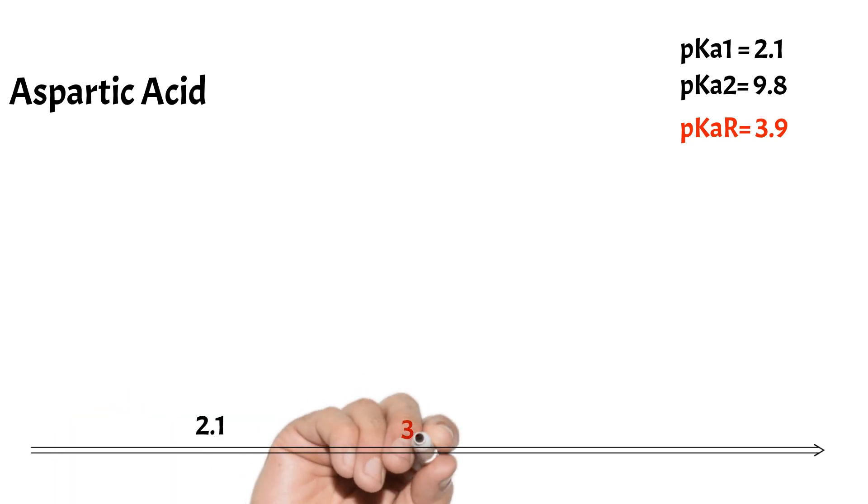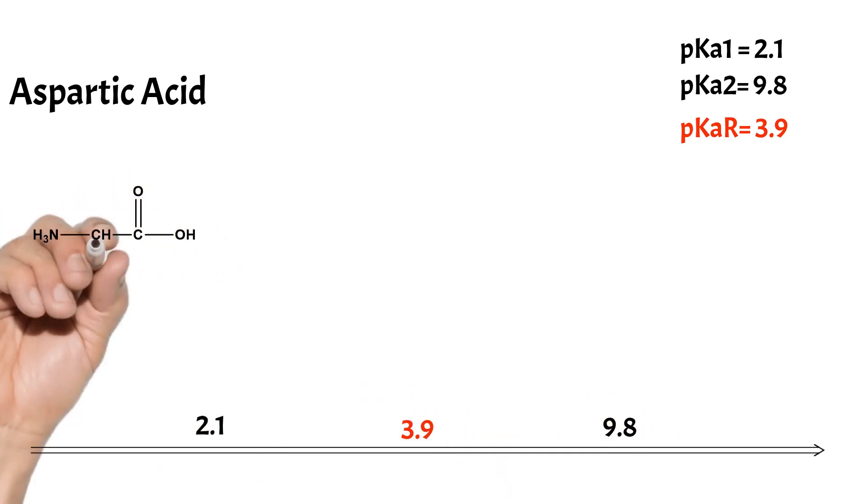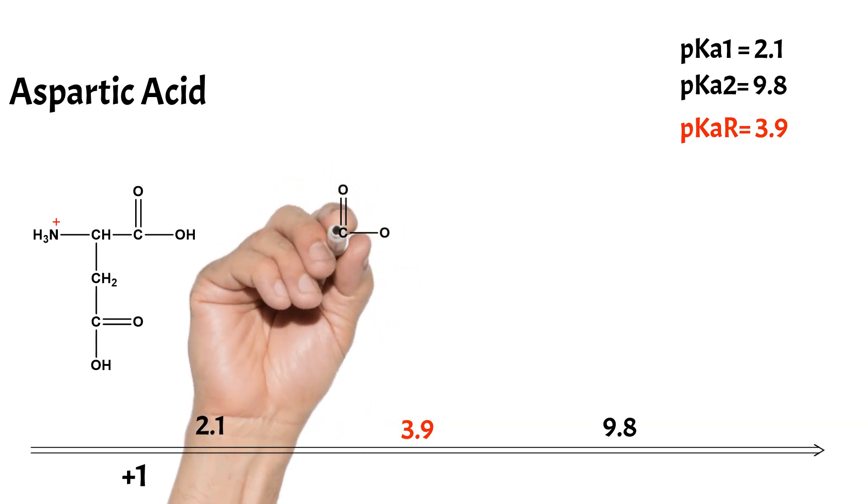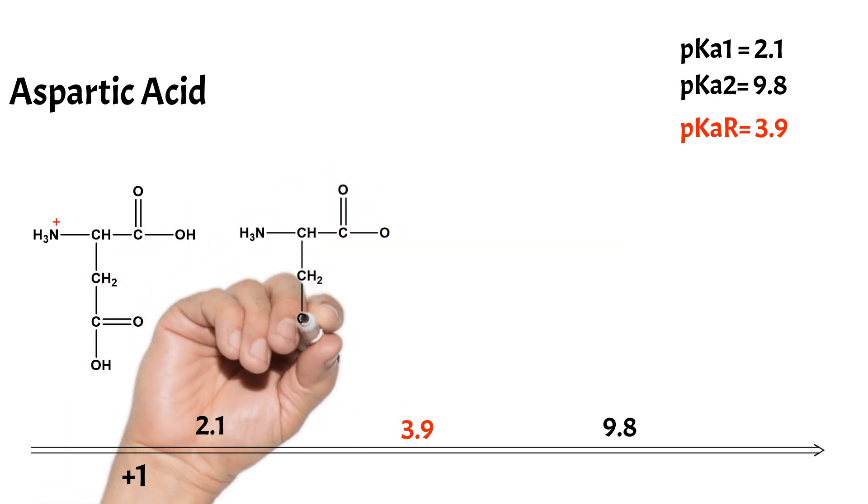Let's put the pK values on the pH line. At pH below pK1, where all groups are protonated, the net charge is plus one. At pK1, the alpha-carboxyl group will lose its proton and the net charge changes to zero.